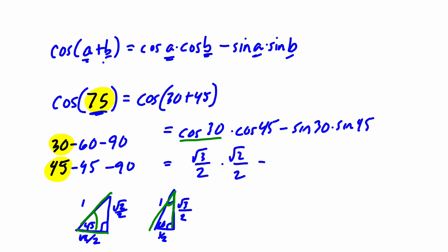And then we're going to subtract the sine of 30. So we'll use red now. Sine of 30 is opposite over hypotenuse. Okay, so that's 1 half over 1 or just a half times the sine of 45, which is the same as the cosine. It's √2 over 2, right? If we look over here, here's the 45 opposite over hypotenuse.